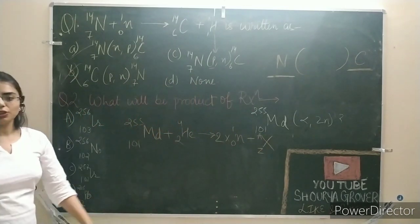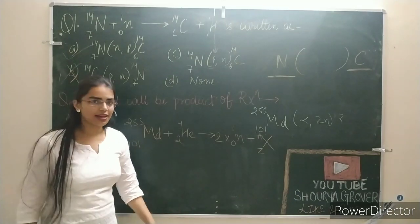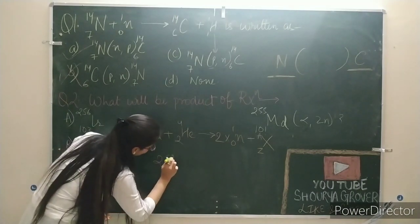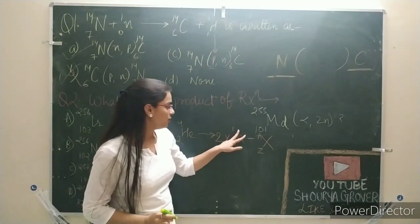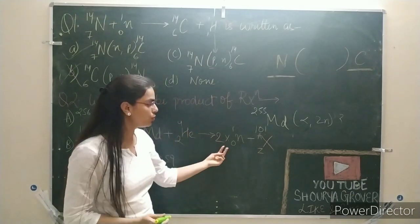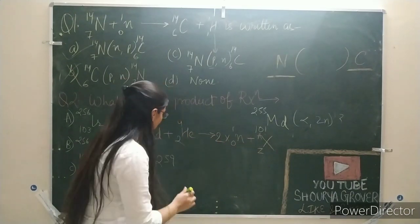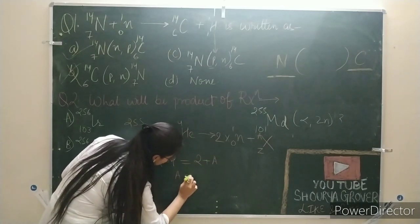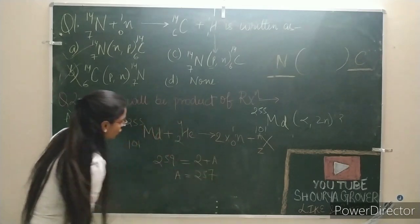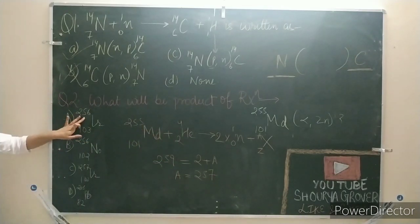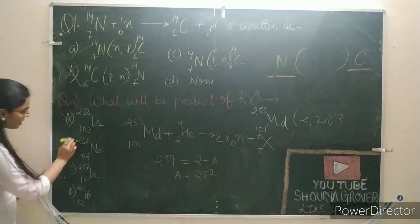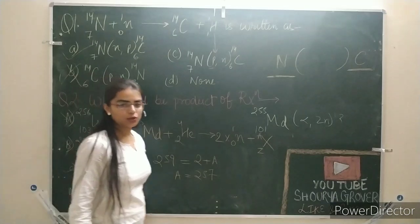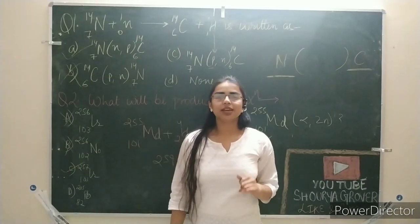The left-hand side is equal to the right-hand side. We will do 255 plus 4, which gives 259. Here we will write 1 into 2 — so 2, because there are two neutrons present. So 2 plus A equals 259, meaning A equals 257. Let's check the options: 256 is wrong, 256 is wrong, 257 — so automatically our answer is option C. Let's move on to our next question.